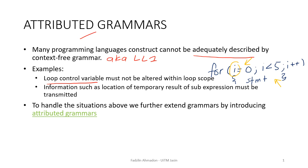Additionally, we also do not have a mechanism to pass values from one branch of an attributed tree to another. Therefore, to handle situations such as above, we further extend our grammar by introducing attributed grammar.